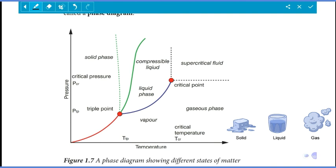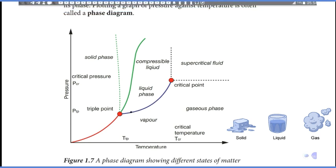The boiling point of a substance depends on the surrounding pressure. The boundary on the phase diagram between the liquid phase and vapor phase represents the boiling point at each corresponding pressure.